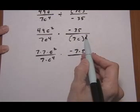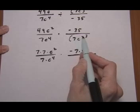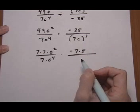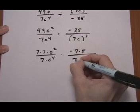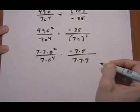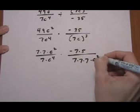And on the bottom right if I take this exponent of 3 and give it to both the 7 and the c, which is okay because these are factors, they're being multiplied, I have 7 cubed or 7 times 7 times 7 times c cubed.